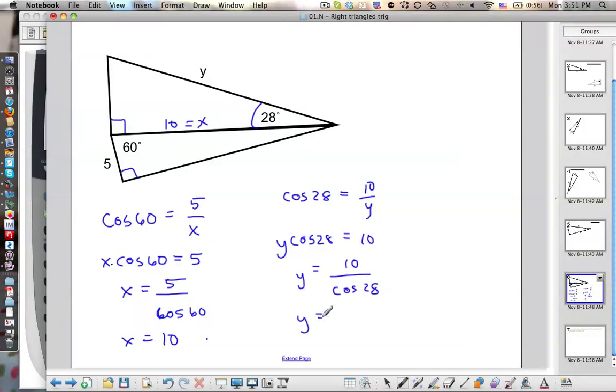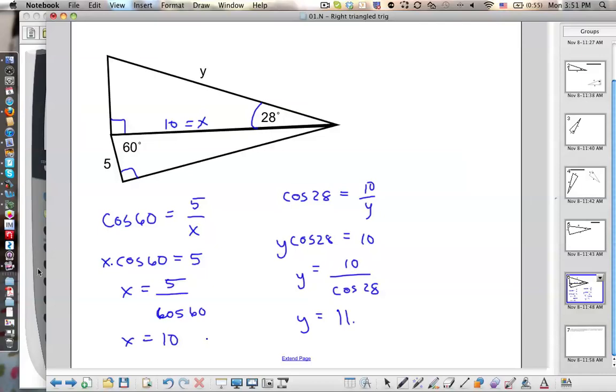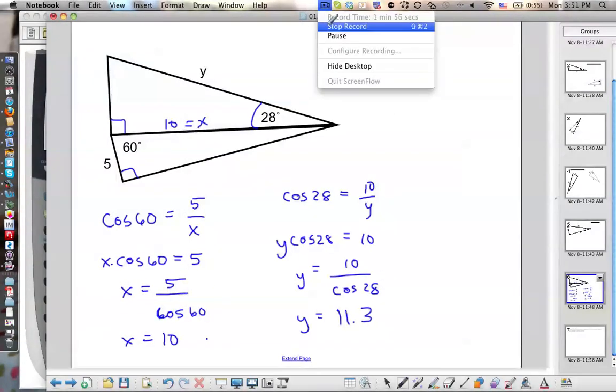And then y equals 10 divided by cosine 28. And we get 11 point... what was that? 11.3. There you go, 11.3.